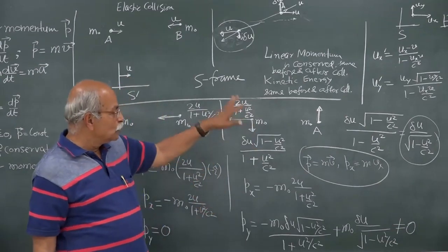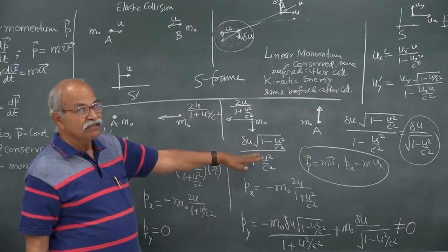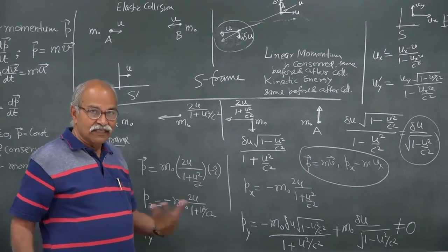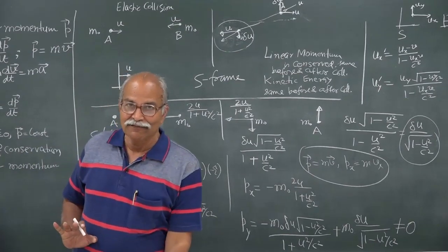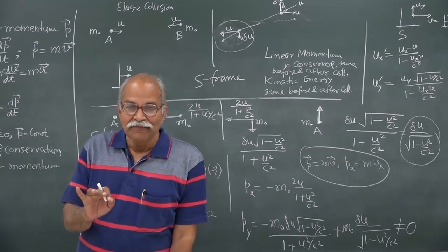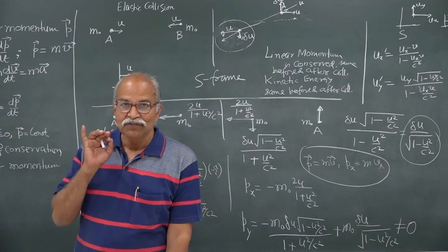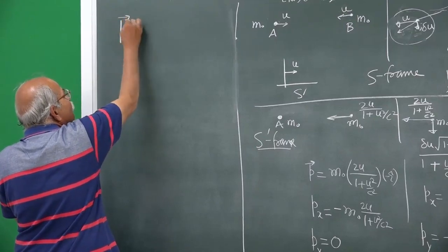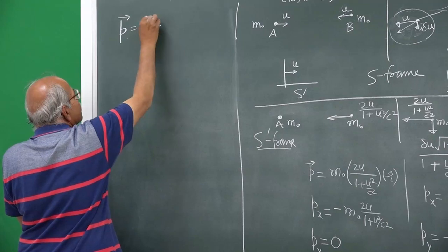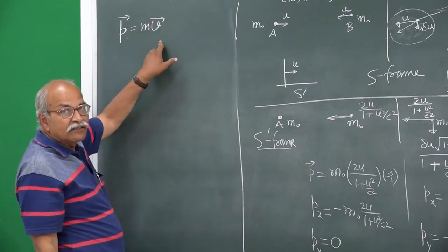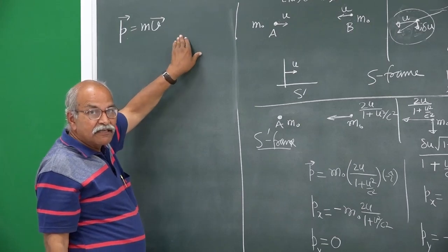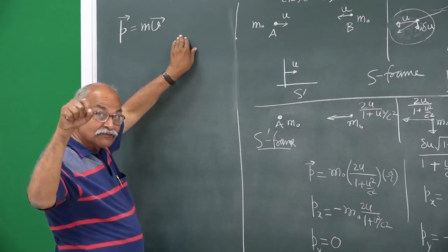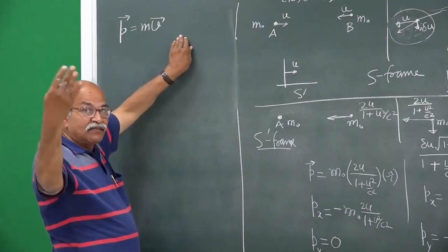If we still want to go with linear momentum conservation, then the definition of linear momentum has to be modified — that is the topic I would like to address today. The linear momentum as defined in classical Newtonian mechanics is p equals mass times velocity, and we modify it by multiplying a factor which will depend on speed, because it is speed which is crucial: low speed works, high speed does not work.